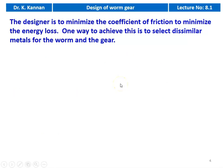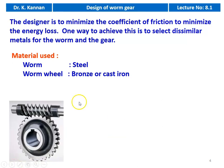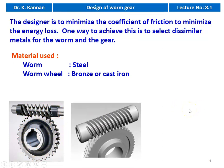Considerable energy is dissipated mainly in the form of heat due to the sliding action between the worm and the worm gear, so we have to give provision for the removal of heat energy. The designer must minimize the coefficient of friction to minimize energy loss. One way to achieve this is to select dissimilar metals for the worm and the worm gear. Normally, we select a steel worm and for the worm wheel, either bronze or cast iron. Here, the circular element is the worm wheel and the top element is the worm.